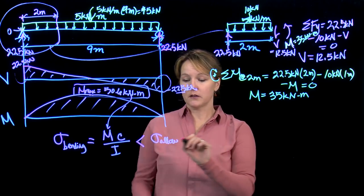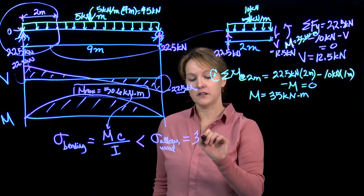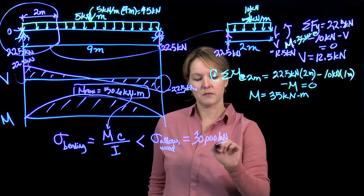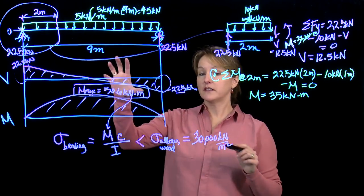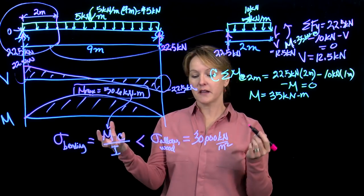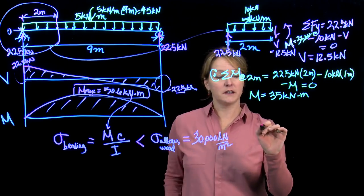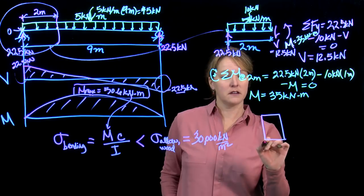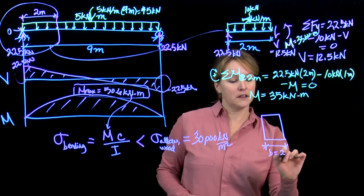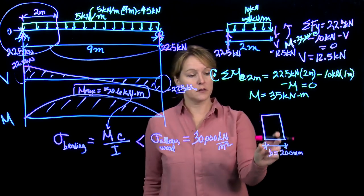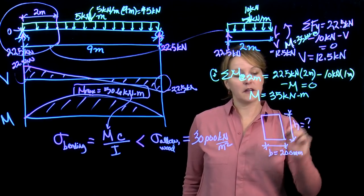We're going to assume that Owl's going to use wood again, and the allowable stress for the wood he's using is 30,000 kilonewtons per meter squared. This gives me a starting point. My goal is to design the cross section of the beam. I need to make some assumptions. We've assumed it's wood. I'm going to assume we're going to use a rectangular cross section, and that this width is 200 millimeters, to give me a starting point. Then I'm going to determine what height I need. That's my goal, to figure out that height.